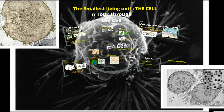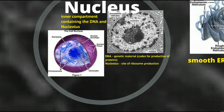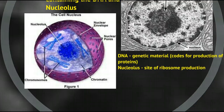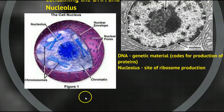Now we're ready for our tour. We'll start in the nucleus. The nucleus is the central office of our cell factory — it directs the activity of the cell. The nucleus houses the genetic material, the DNA, which codes for the production of proteins. Basically, this is the instruction manual for our cell factory. The nucleus also houses the nucleolus, which is for the production of ribosomes. You will notice that the nuclear membrane has many pores, which allows for things to pass in and out of the nucleus.